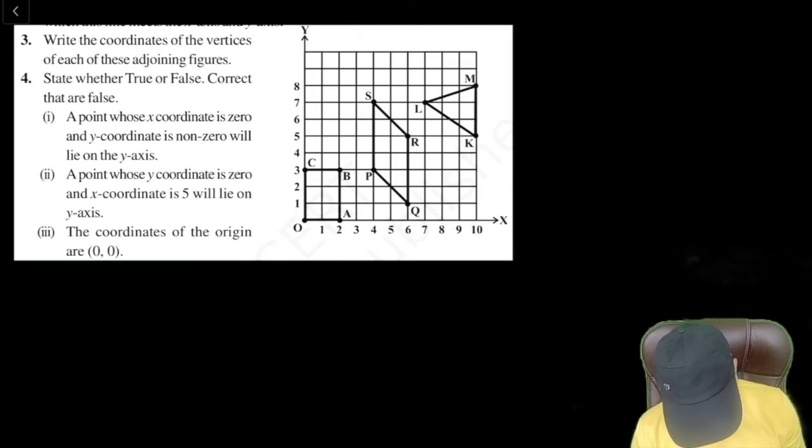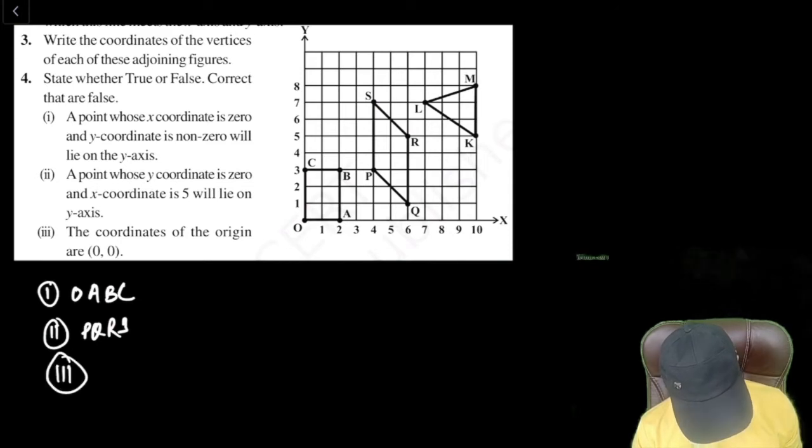Let's jot down the figures name first. So the first point is O, A, B, C. Second one is P, Q, R, S. And third one is K, L, M. You can also say it L, M, K, M, L, something like that, whatever you like.